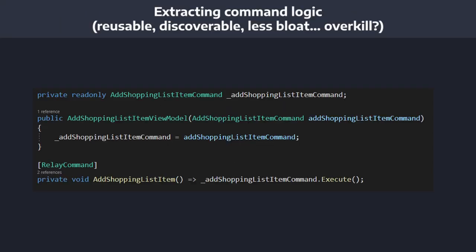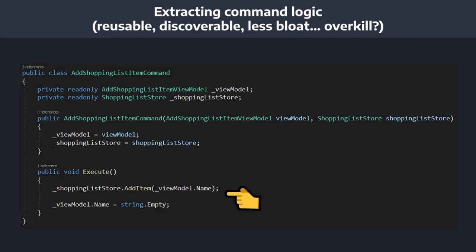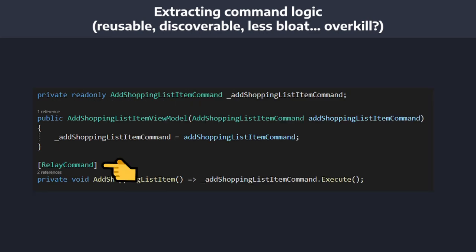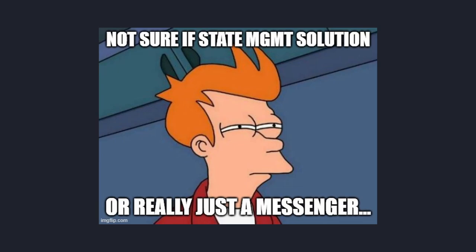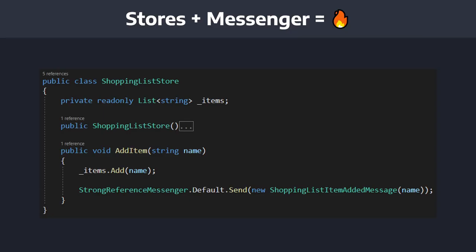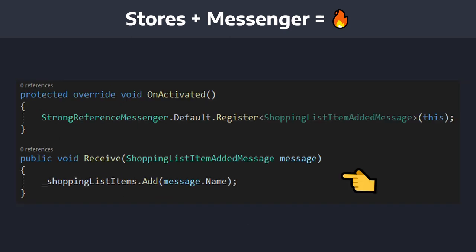If I'm still worried about bloat with RelayCommands, I could have a function in my view model that delegates to a service which executes the command logic, then mark that function with RelayCommand — and I shouldn't have any bloat then. My next concern was with the Messenger. At first I felt like the Messenger was some kind of state management solution, but in reality it just works with your state management solution. Whenever your state changes, you can leverage a Messenger to push out state changes to subscribed view models.